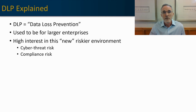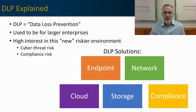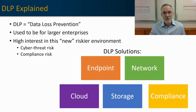When we talk about DLP solutions, we generally talk about five major categories. The first is data in use — that's generally an endpoint solution. The second is data in motion — that's generally a network DLP solution. The third is a mix of data in use and data in motion: that's a newer category, a cloud DLP solution. The next is data at rest, which is a storage DLP solution. And lastly, there's a compliance solution that spans all of the other four categories.